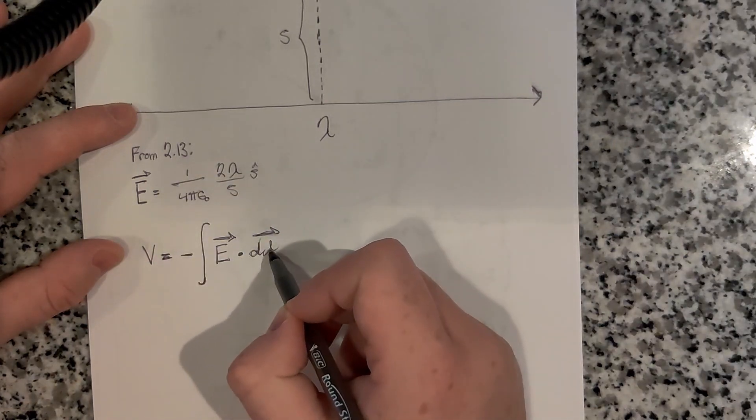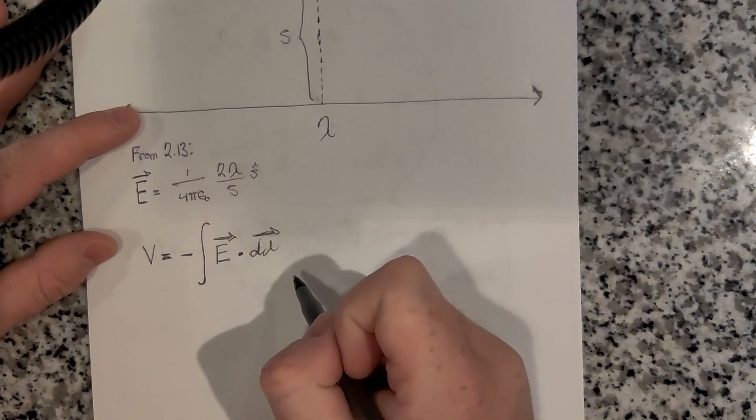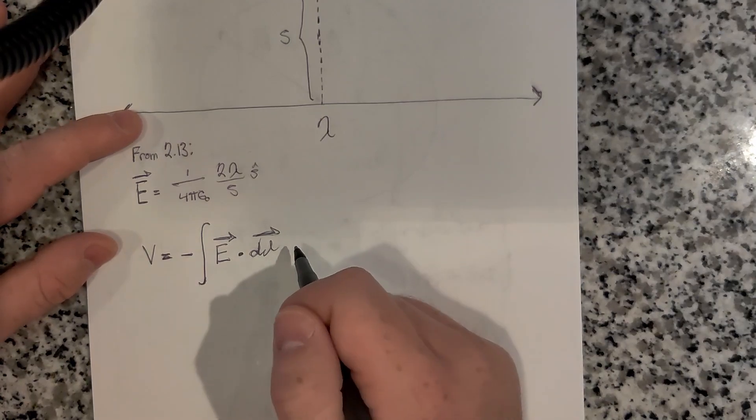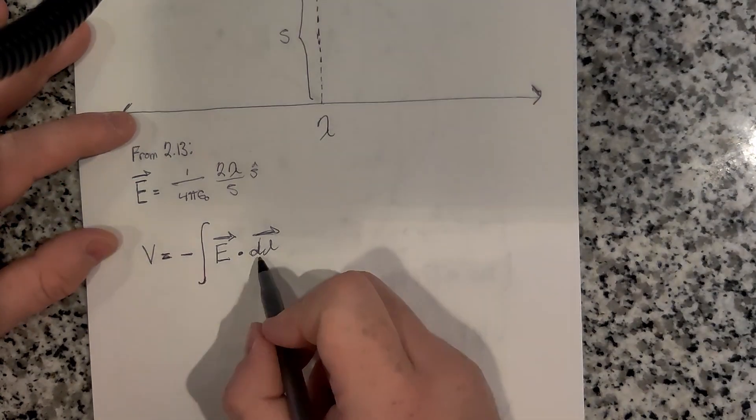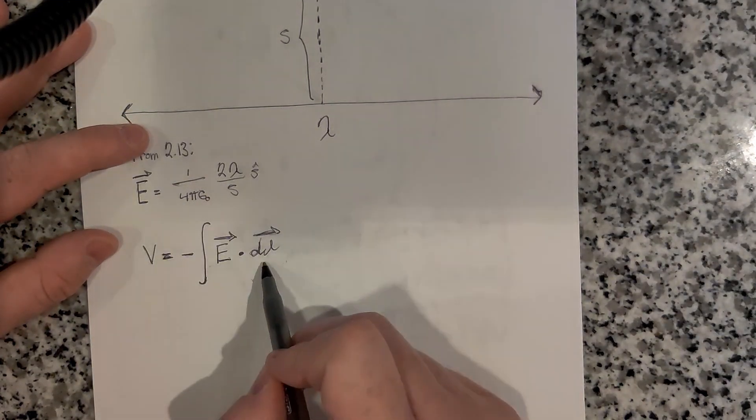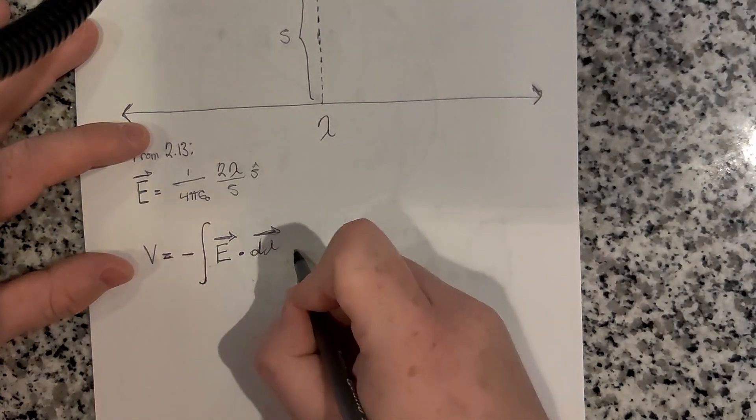Our dl is just going to be ds. You can find what dl would be written in terms of cylindrical coordinates in the front of the book. When you dot this together, you're just going to get this times ds, basically.